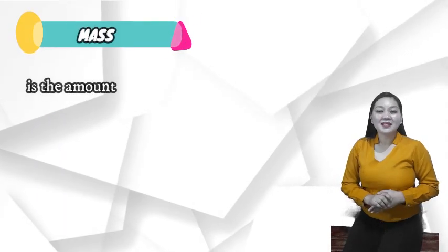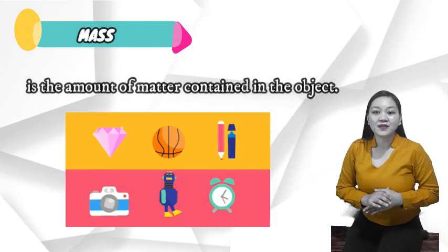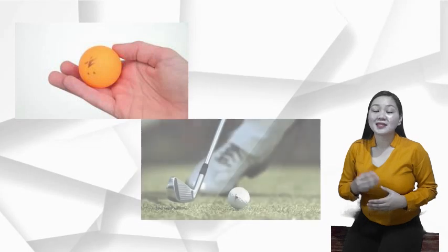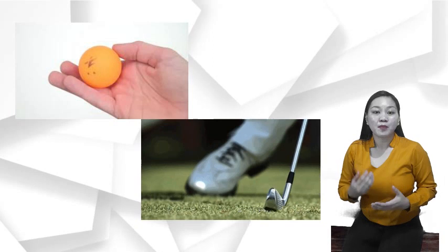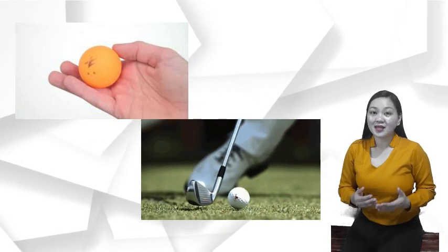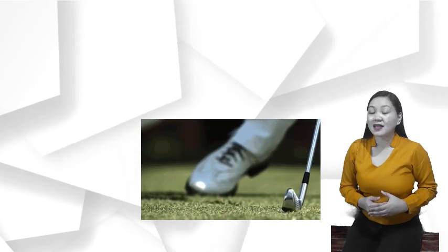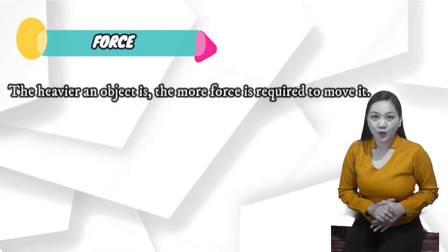Mass. Mass is the amount of matter contained in the object. Not all objects of the same size have the same amount of mass and the same weight. A ping pong ball, for example, is about the same size as a golf ball, and the golf ball weighs more than the ping pong ball. So in this context, the golf ball possesses more mass, making it heavier. The heavier an object is, the more force is required to move.